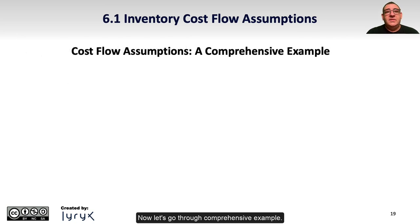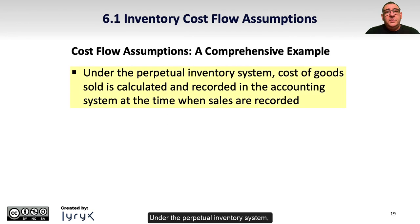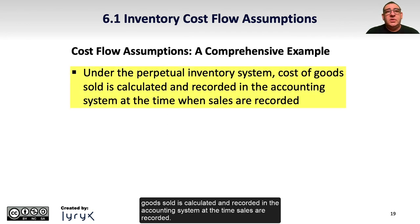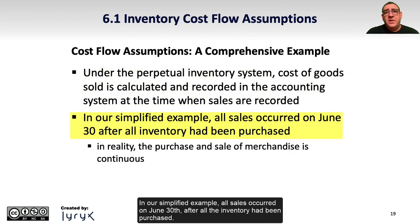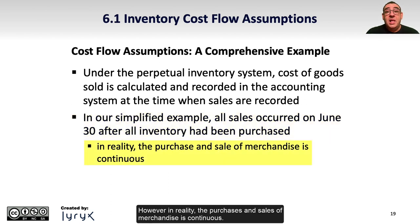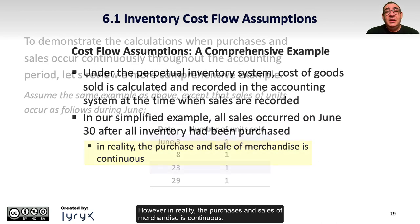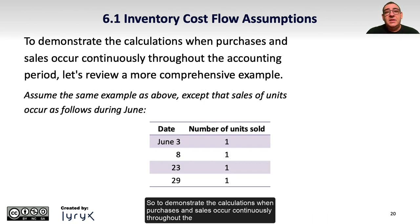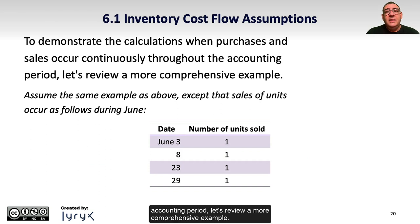Now let's go through a comprehensive example. Under the perpetual inventory system, cost of goods sold is calculated and recorded in the accounting system at the time sales are recorded. In our simplified example, all sales occurred on June 30th after all the inventory had been purchased; however, in reality purchases and sales of merchandise are continuous. To demonstrate the calculations when purchases and sales occur continuously throughout the accounting period, let's review a more comprehensive example.